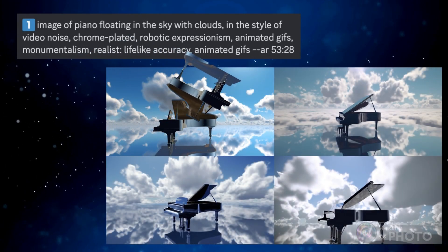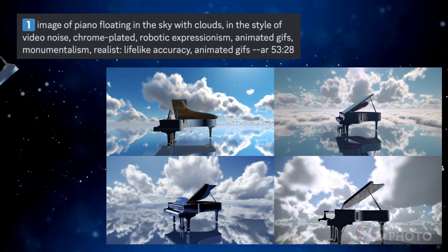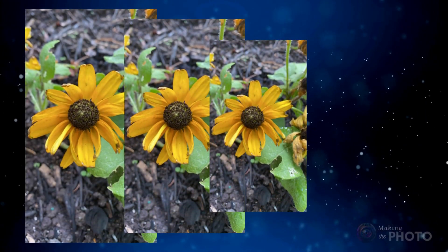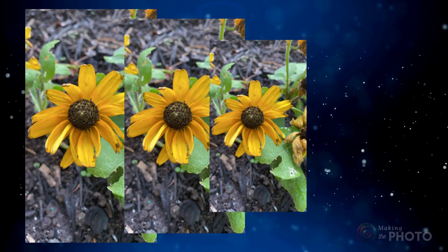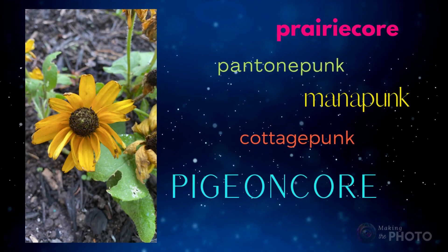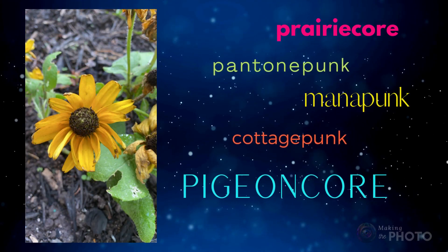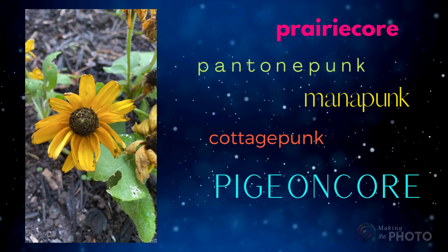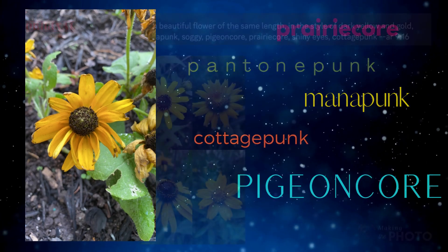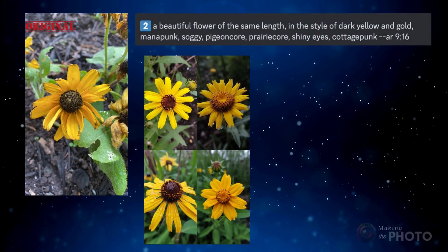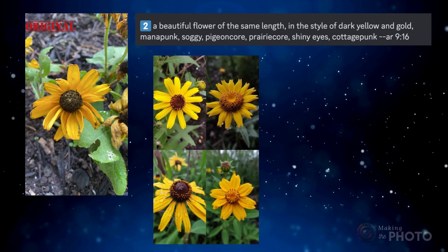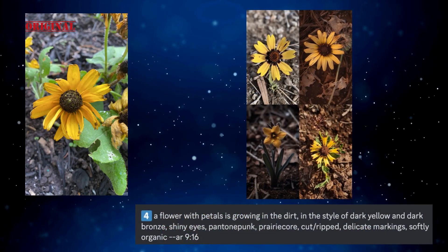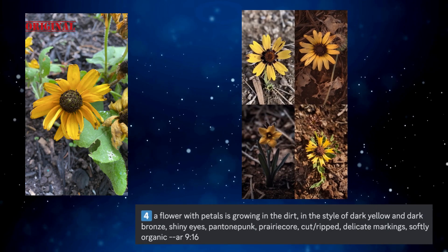I think sometimes Midjourney is just making up words. It's a simple flower, right? The AI sees Mana Punk, Pigeon Core, Prairie Core, Cottage Punk, and whatever Pantone Punk is. I scoff, but run the prompts and the images come out just fine. Maybe these punk-core words add a bit of aesthetic spice.